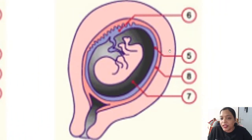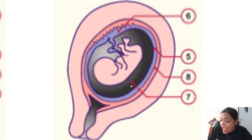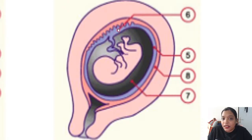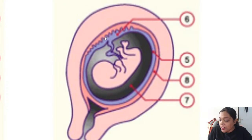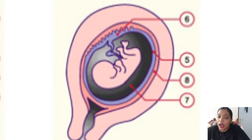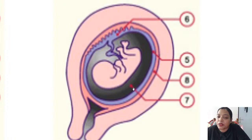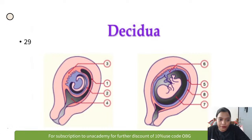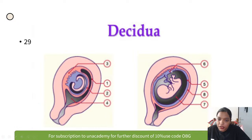They fuse to form decidua vera — number eight is decidua vera, number seven is the amniotic cavity. In the fetal membranes, the outer layer is chorion and the inner layer is amnion. The sixth structure is chorion frondosum, and the rest of the chorion toward the uterine cavity is chorion laeve.